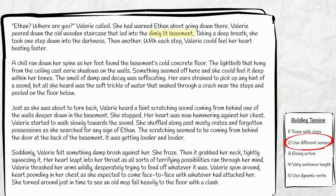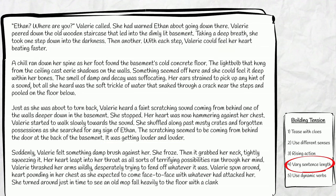Now let's look at places different senses have been described: dimly lit basement, cold concrete floor, eerie shadows, smell of damp and decay. Here are some examples of rising action. Let's now look at where sentence length has been varied: "She stopped. She froze." And here is a sentence fragment: "Then another." Here are some dynamic verbs that have been used: hammering, thrashed, fend.